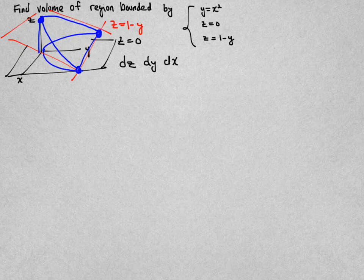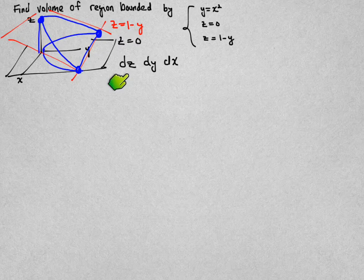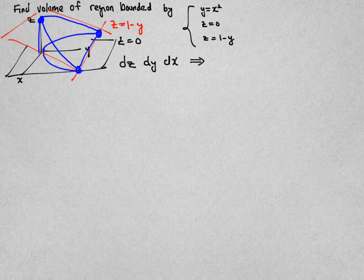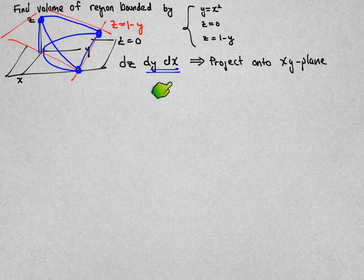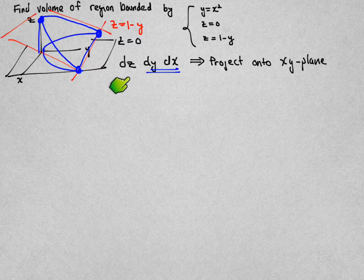This is a follow-up of the previous video where we did the integration in the order dz, dy, and dx just to illustrate how you might vary these kind of calculations. We did that by projecting onto the xy-plane and in doing so we found the limits of integration for x and y first and then found the z limits of integration.